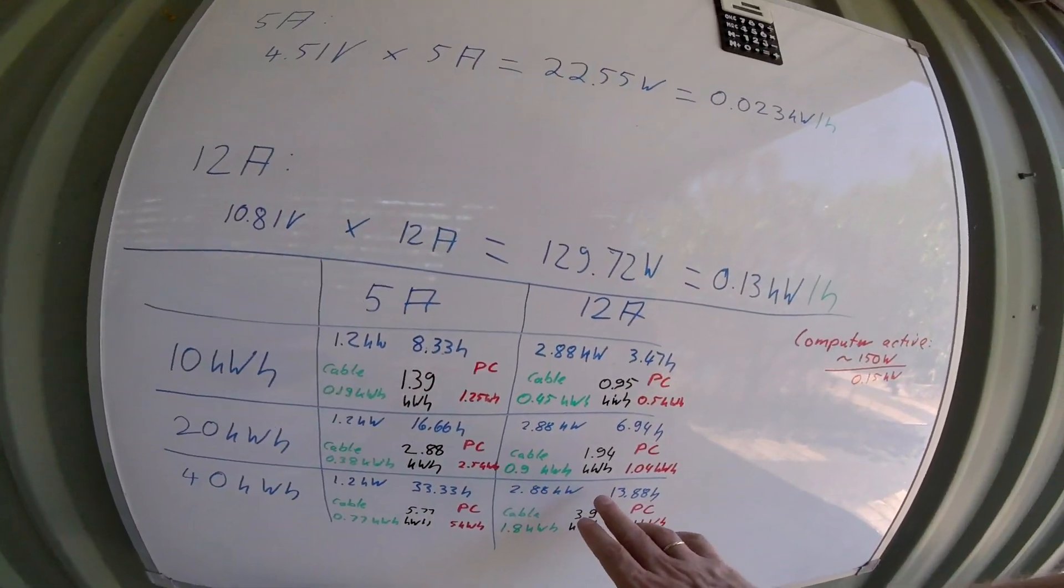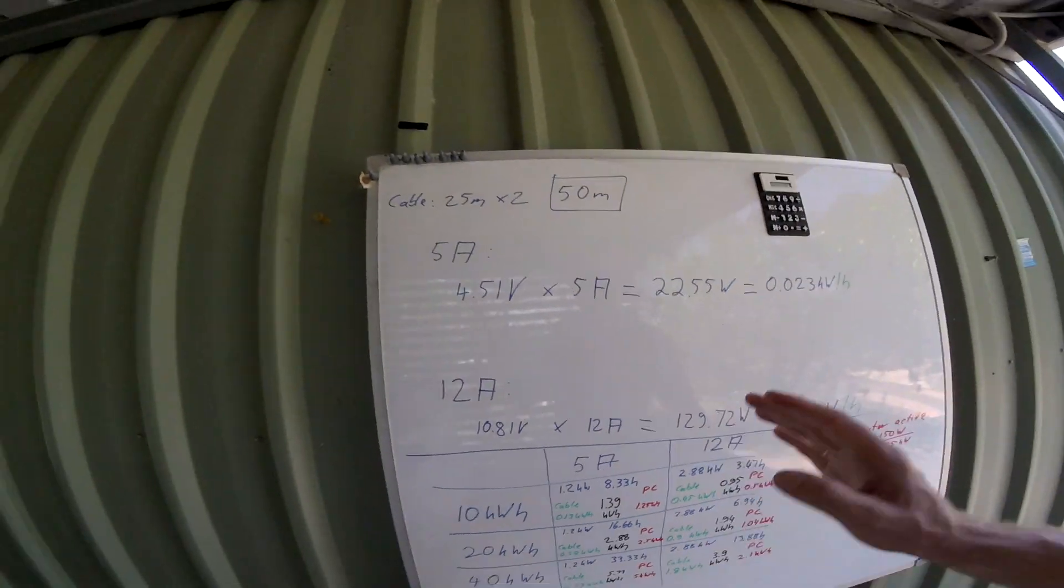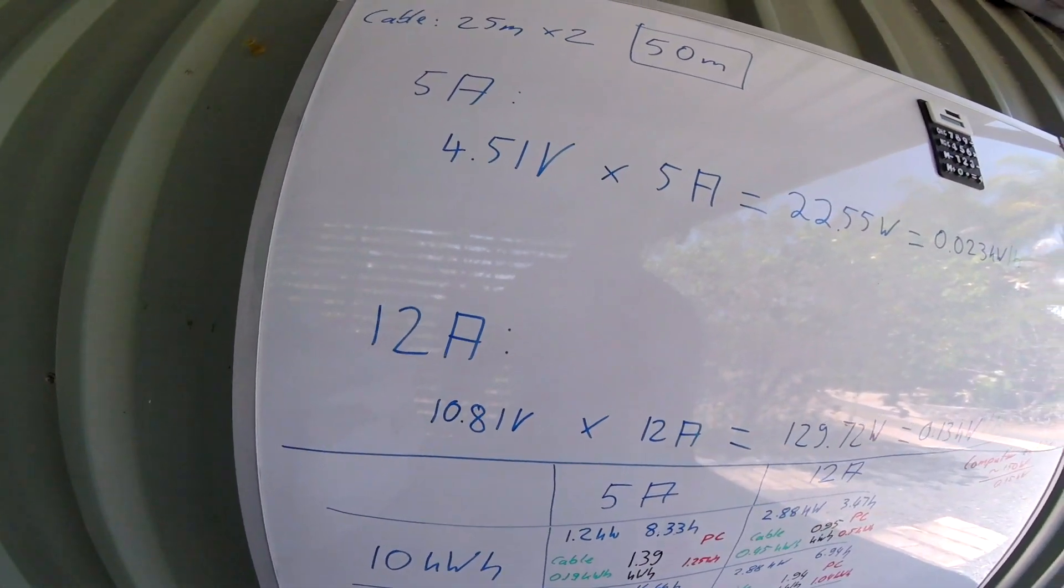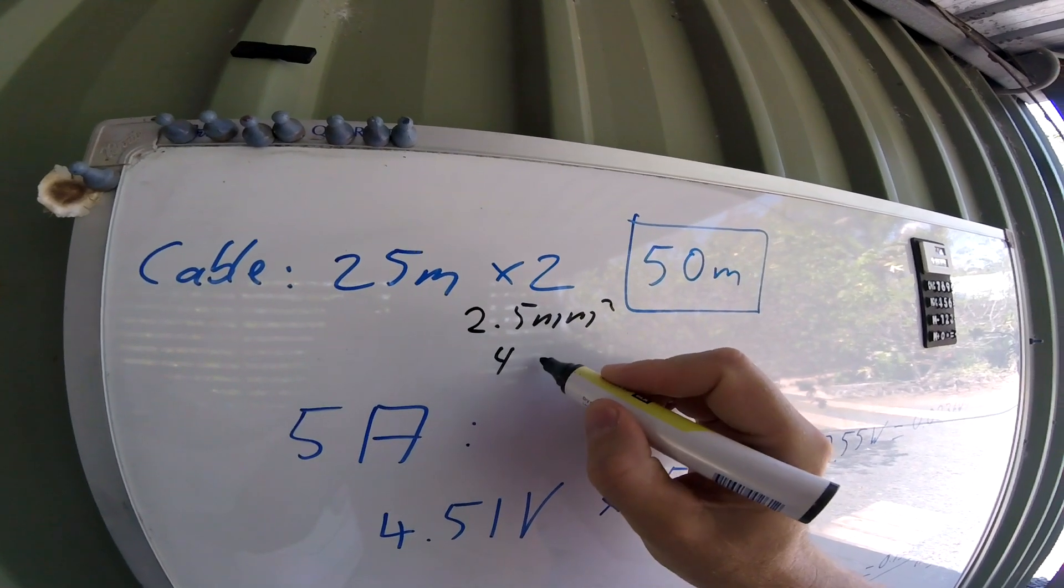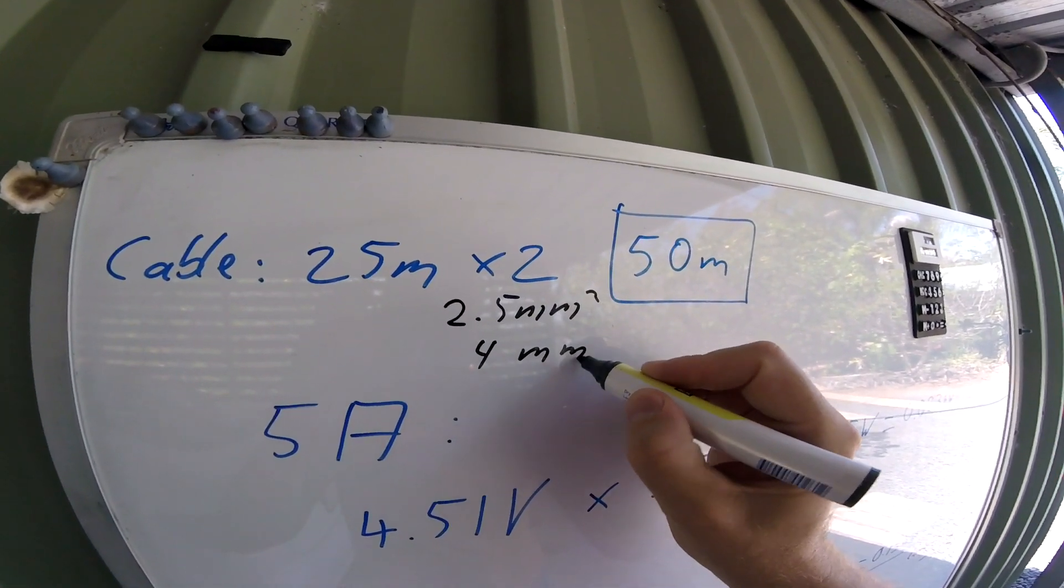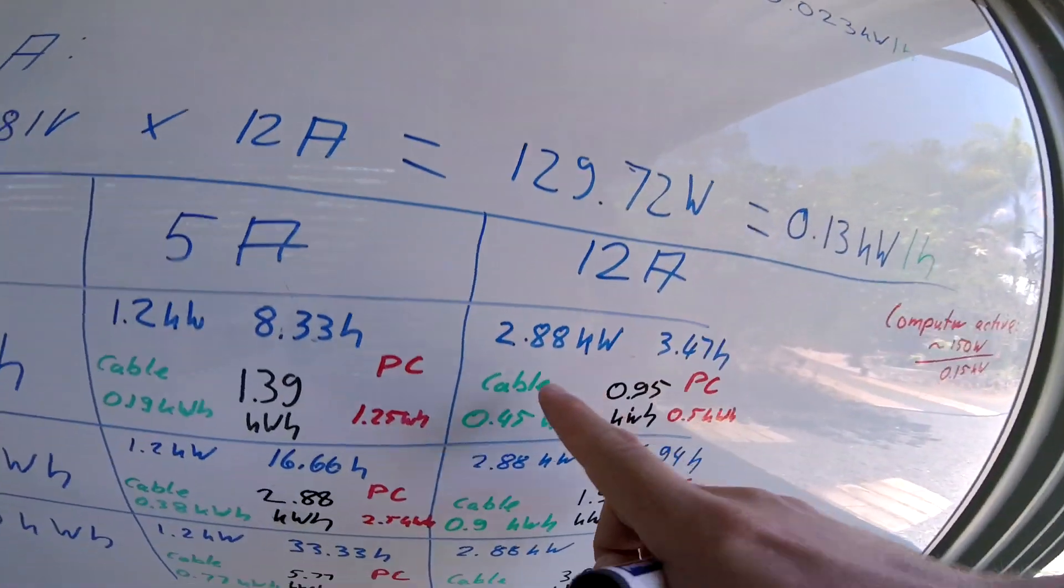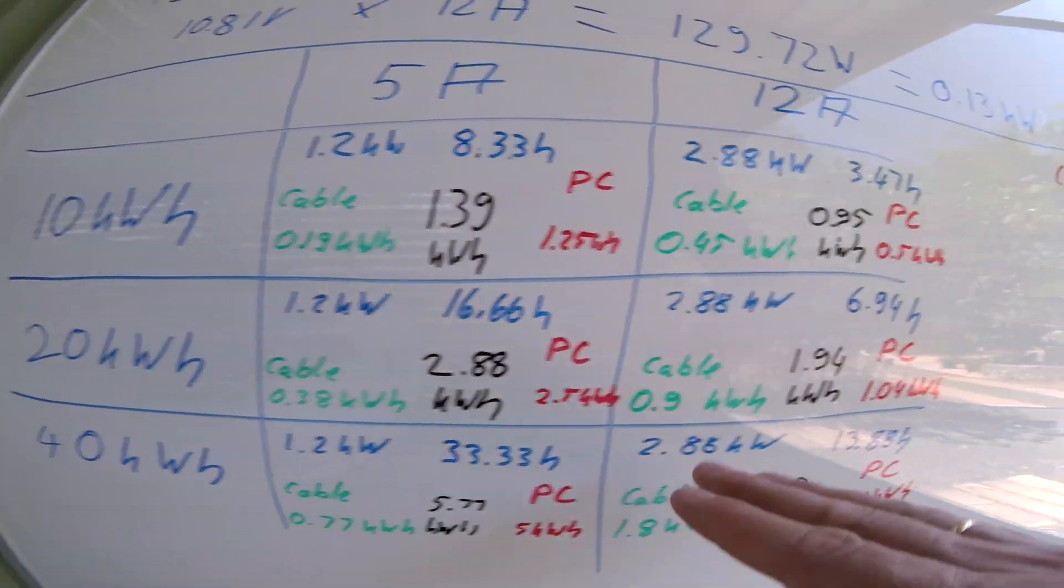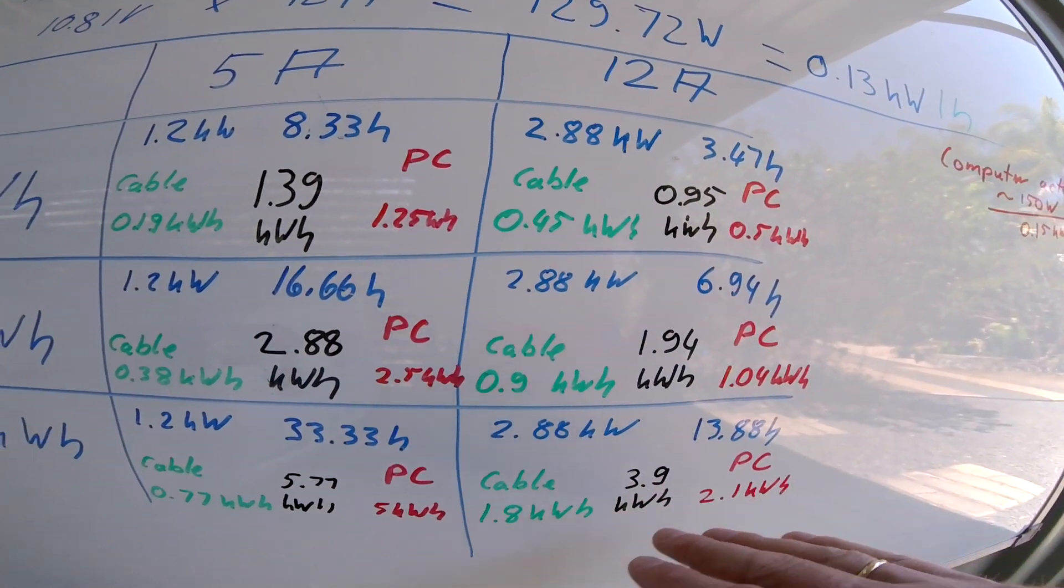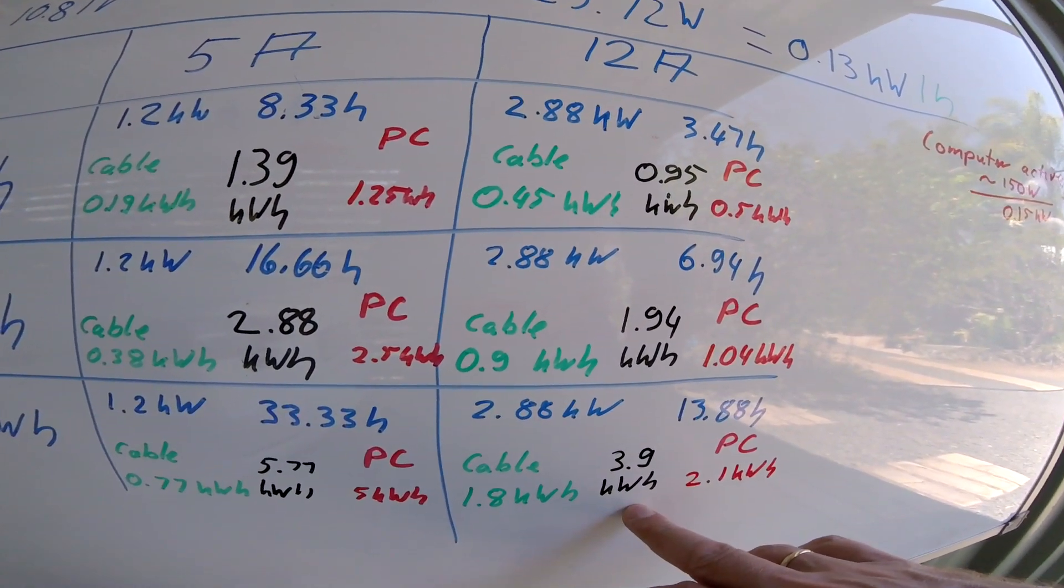And you can even more minimize this if you would have a thicker cable. We have a 2.5 millimeter cable here. If you would have a 4 millimeter square millimeter cable, the losses on the cable would be a lot less here, as well, but especially here on the higher settings, and we would come down a little bit more on the actual losses for cable and computers.